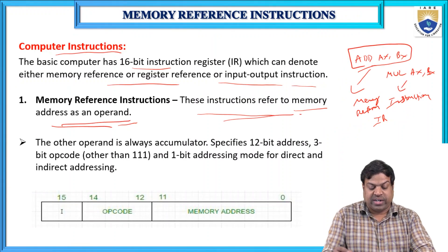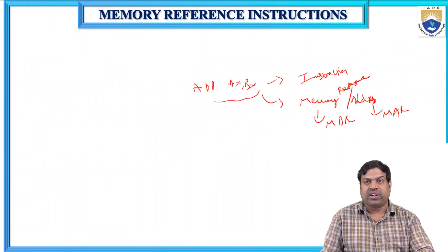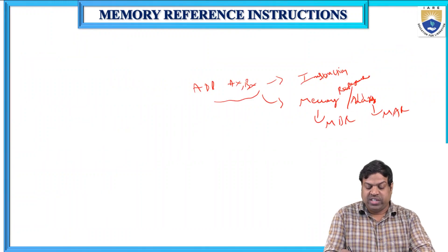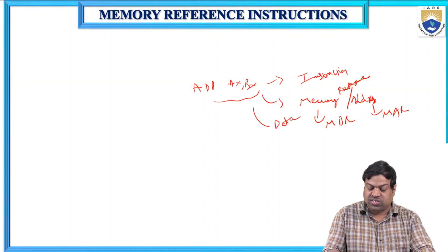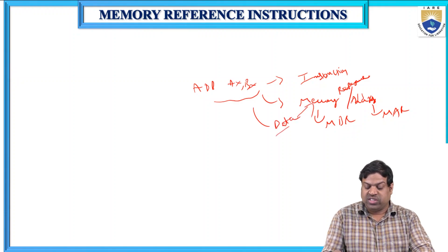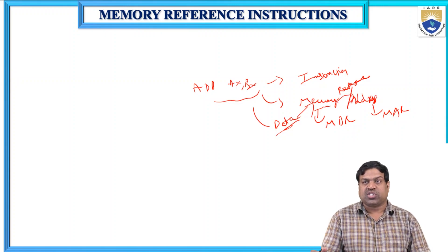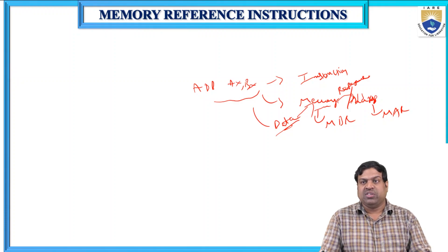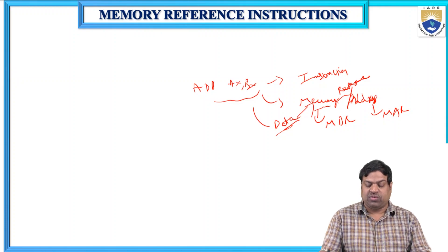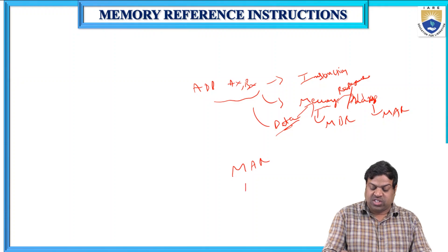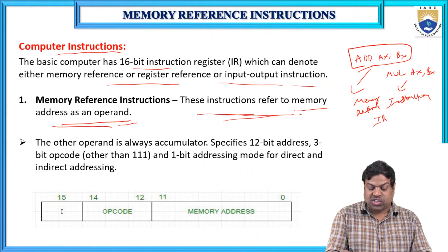These instructions refer to memory address as an operand. Any instruction we consider has data allocated at a particular memory address. That is the memory address register and memory data register. The instruction register refers to the address of an operand, and the other operand is always the accumulator, specified by the 12-bit address.